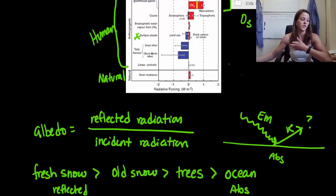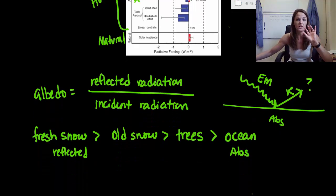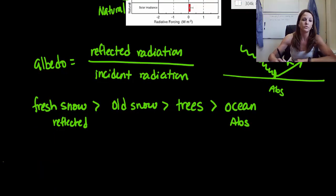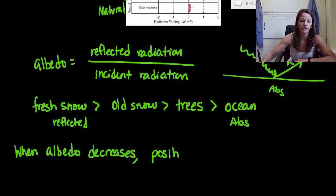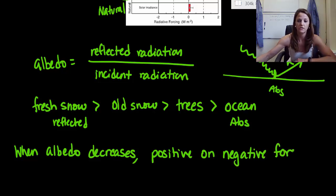So that's a way to look at our different albedos. So now, just using that information, my question would be, when our albedo decreases, does that mean we have more positive or negative forcings?